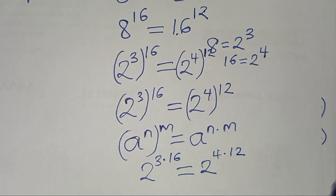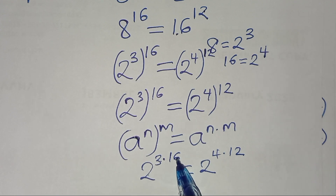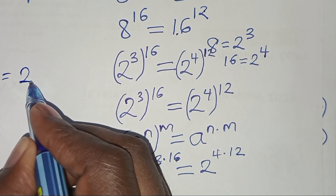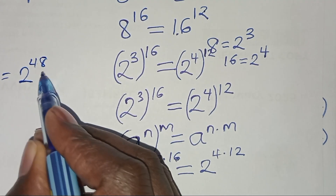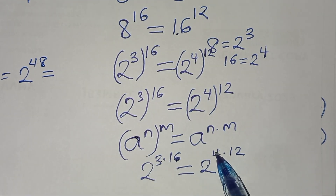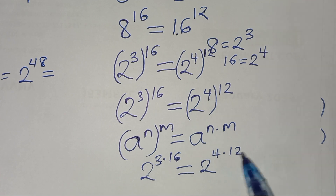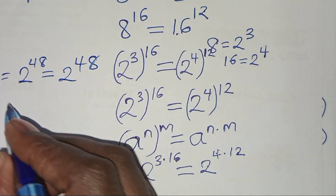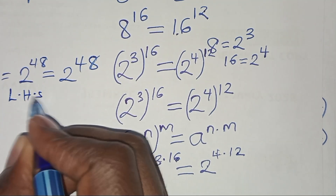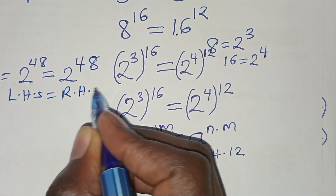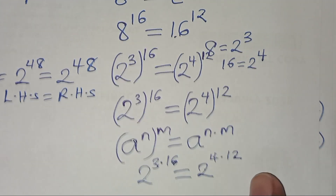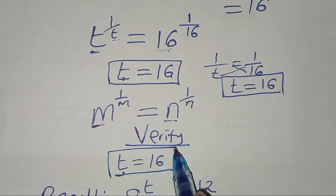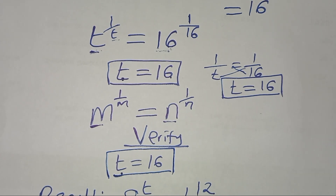Applying the exponent property that (a^n)^m = a^(n×m), we get 2 to the power (3 times 16) equal to 2 to the power (4 times 12). So 3 times 16 is 48, giving 2 to the power 48. And 4 times 12 is also 48, giving 2 to the power 48. Clearly, the left-hand side equals the right-hand side, which affirms that the value of t equal to 16 satisfies the equation.